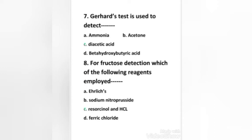Next question: for fructose detection, which of the following reagents is employed? Seliwanoff's reagent, sodium nitroprusside, resorcinol and HCl, or ferric chloride. Right answer is option C, resorcinol and HCl. When the sample is mixed with resorcinol and HCl, a red precipitate forms.